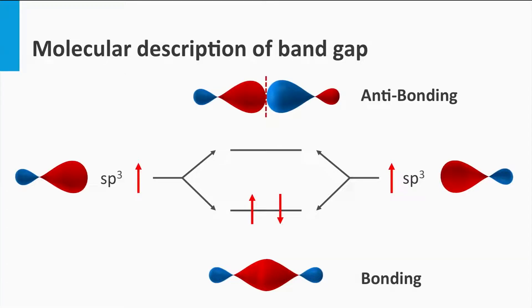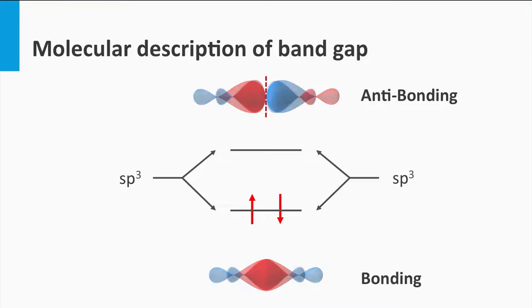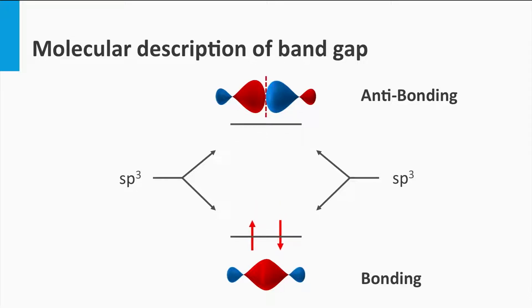The energy level of the bonding level is lower than the original sp3 level and therefore more stable. The second high energy level is called the antibonding level. Its energy level is higher than the original sp3 level, and therefore electrons do not prefer to fill this state. Another important aspect is that the closer the two neighboring atoms are together, the larger the energy splitting between the bonding and antibonding level will be. This is demonstrated in the animation.